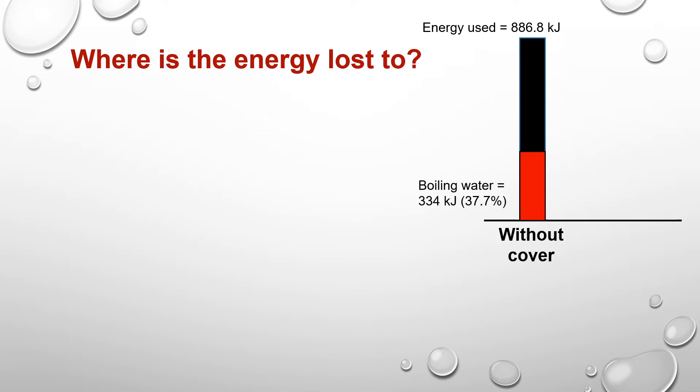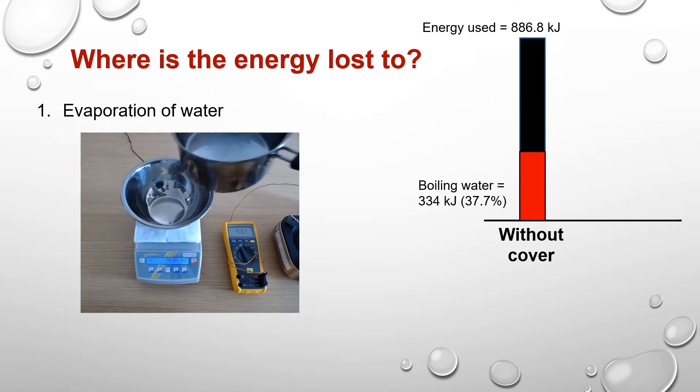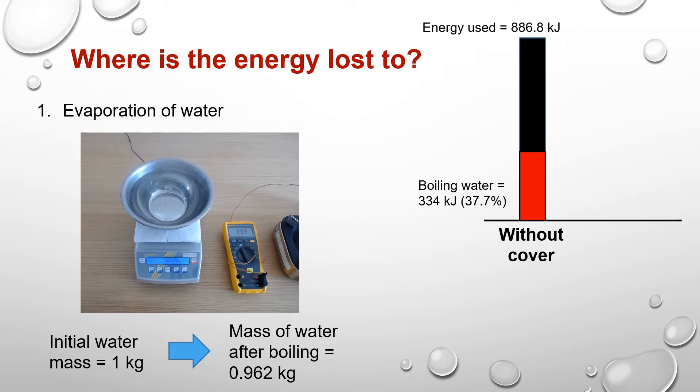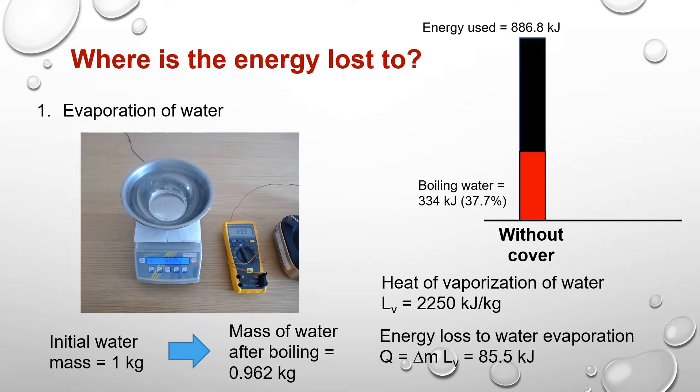One obvious source of loss is the evaporation of water during the boiling process. In fact, at the beginning, the mass of the water is 1 kg, but after boiling, the water mass is reduced to about 0.962 kg. Taking the latent heat of vaporization of water of 2250 kJ per kg, the energy loss due to water evaporation is about 85.5 kJ, which accounts for about 9.6% of the total input energy.